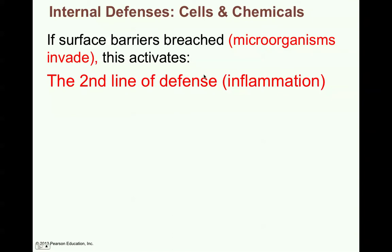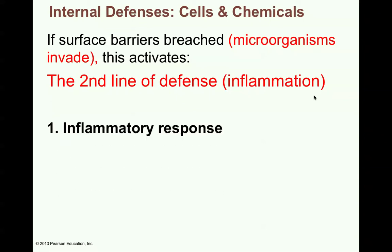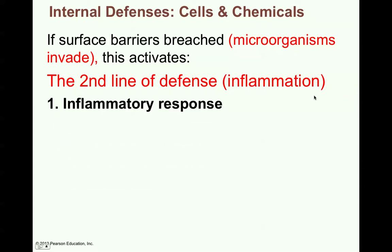Now if the surface barriers are breached — in other words microorganisms invade — this will activate the second line of defense, called inflammation. We could also say this is the inflammatory response. It includes phagocytes, which are general white blood cells such as macrophages or large eaters that will actually approach the foreign cell or pathogen and engulf it.